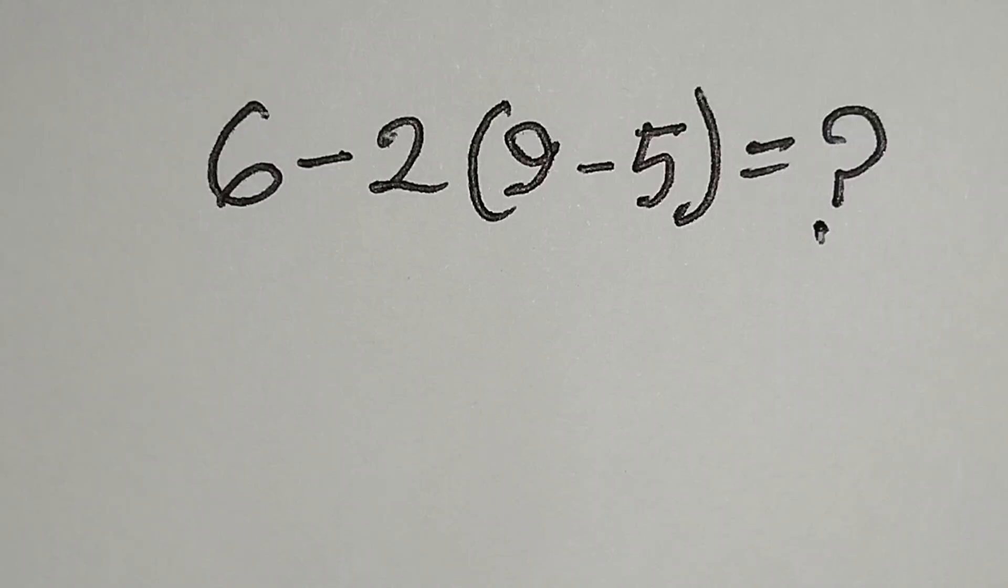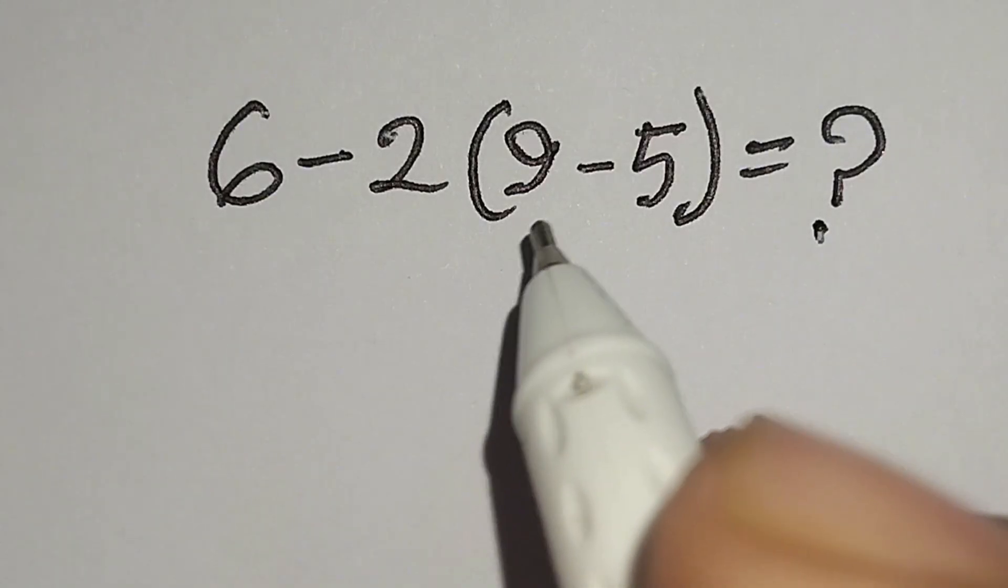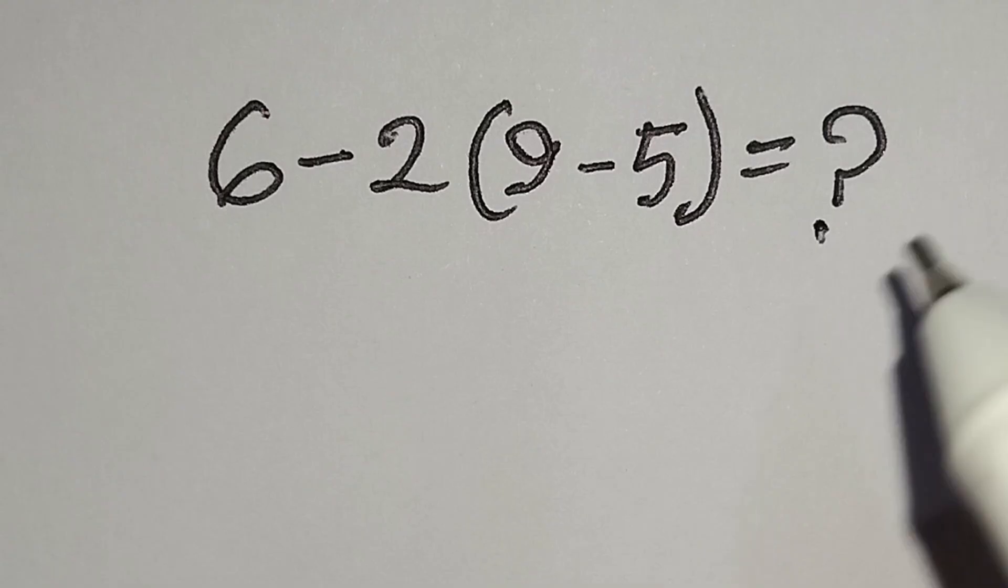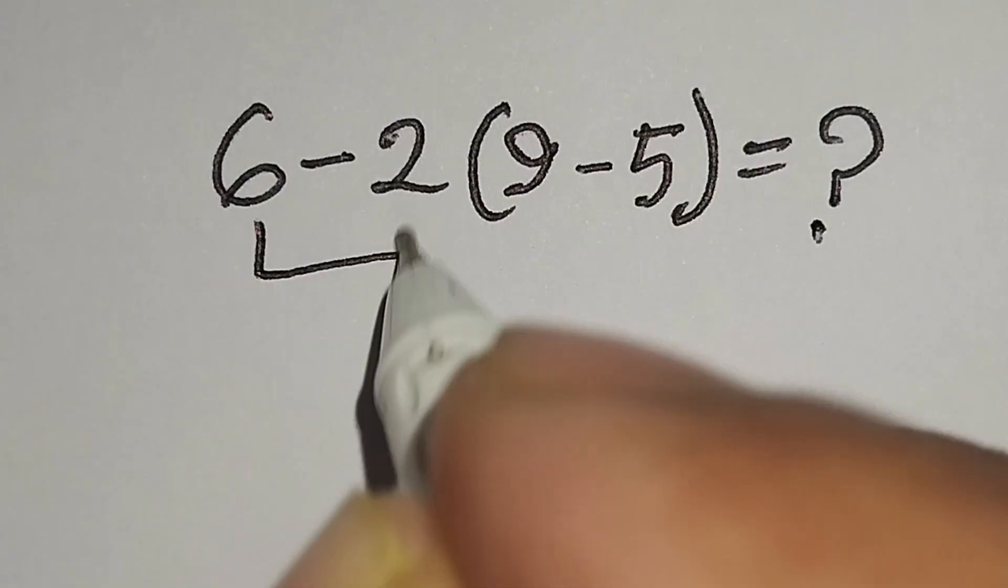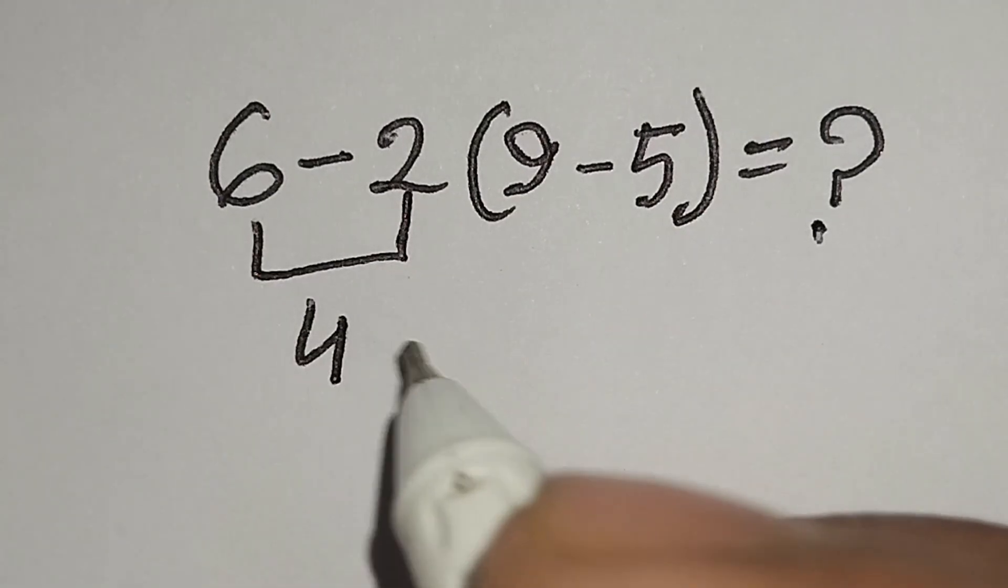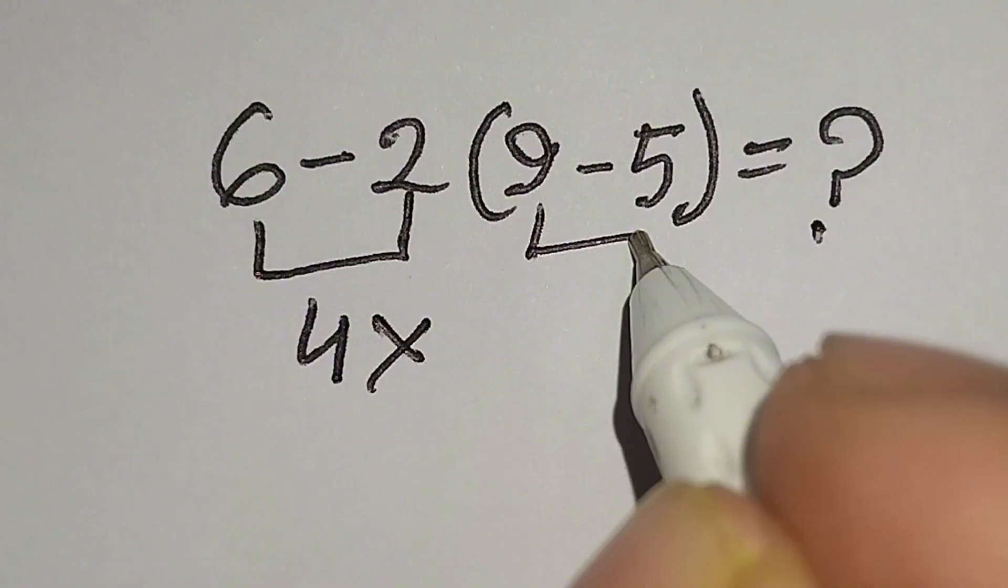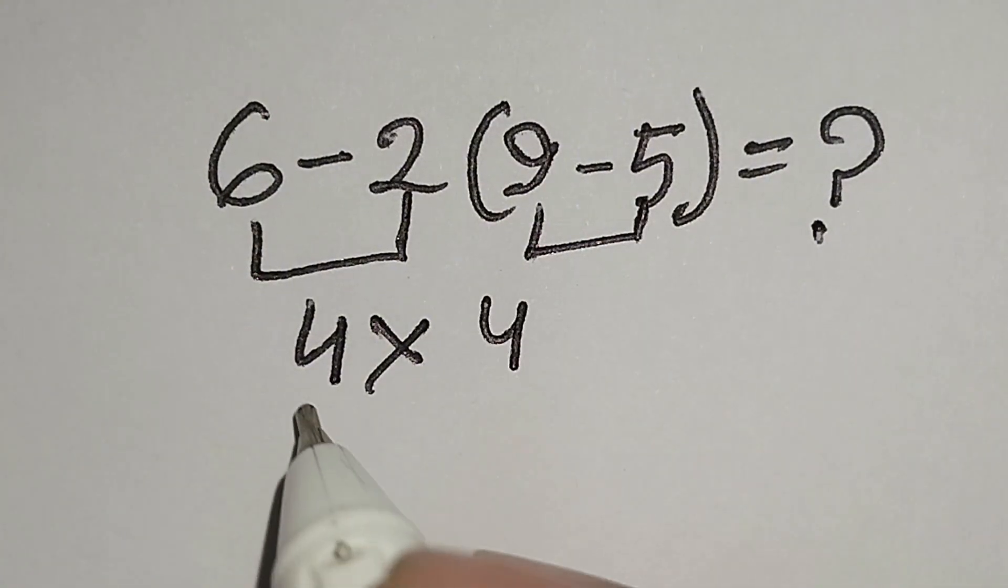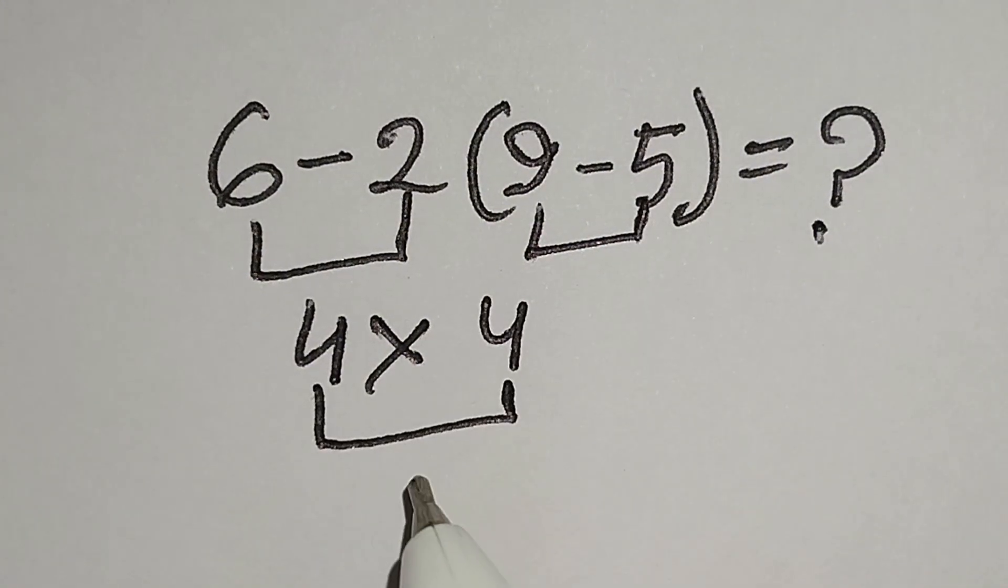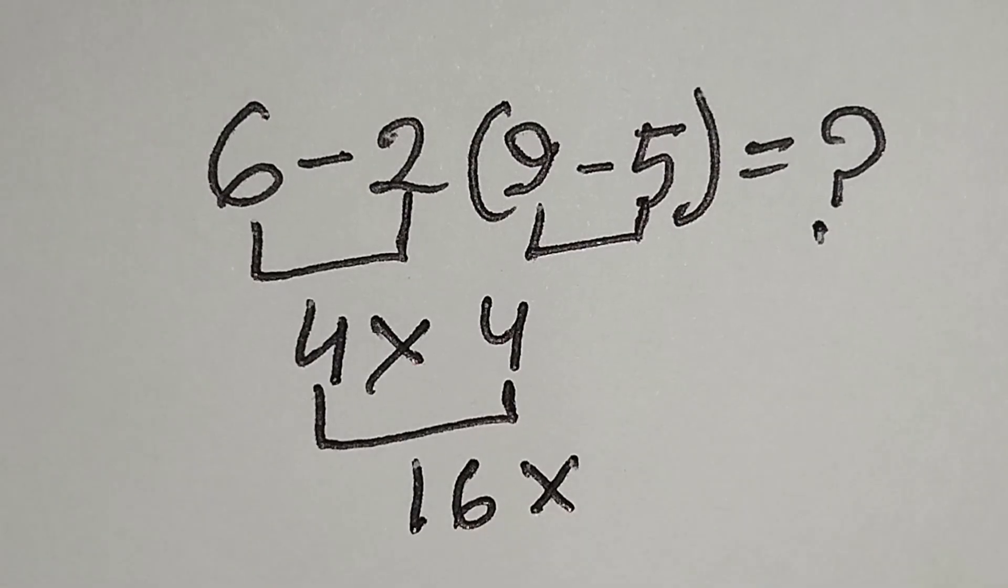Hi guys, this is a nice math problem: 6 - 2(9-5) = ? Here, 6 - 2 gives us 4, multiply this. 9 - 5 gives us 4. 4 multiply 4 gives us 16, but it is not correct.